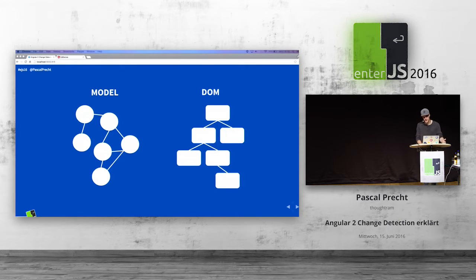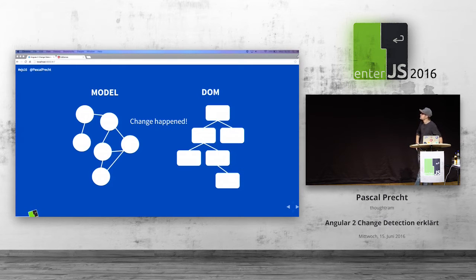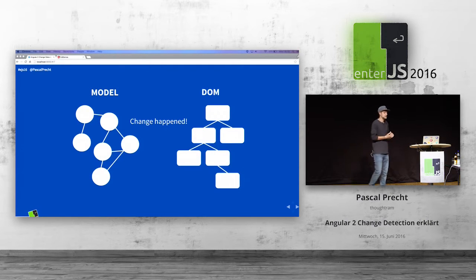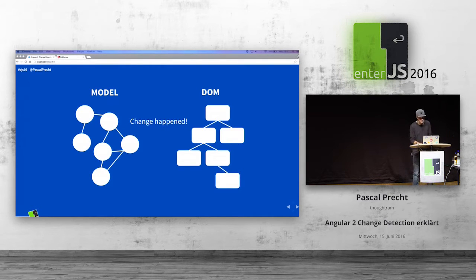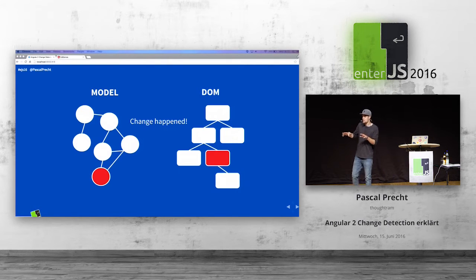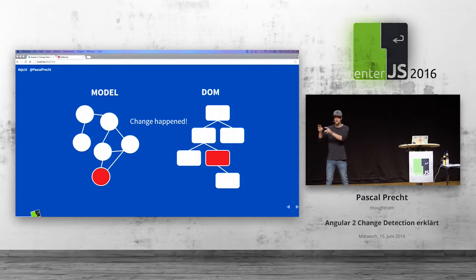After all, rendering is actually a very simple thing to do — it's just a function that takes some model state as an input and generates some HTML or DOM as output. However, it turns out it gets more complicated when we want to keep track of things that can change during runtime. Users interact with the UI: they click a button, perform an Ajax request, and so there are many things that can trigger change.